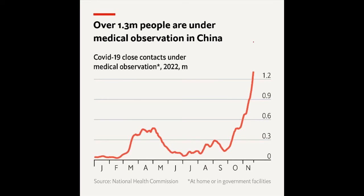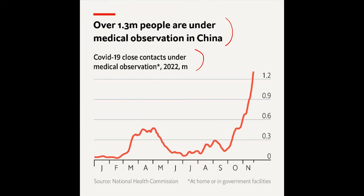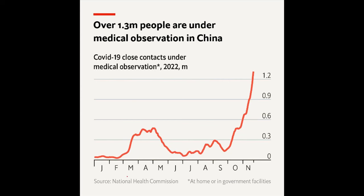The first thing I noticed about charts from The Economist is that they're all very simple. Almost without exception, you can understand all of them within just a few seconds. Take this chart about COVID-19 in China, for example. It shows how 1.3 million people are under medical observation in China currently. There's a very basic title and descriptive title right here. The chart itself is just a basic line chart, which is probably the easiest chart there is to understand. The font is a nice sans-serif that's really easy to read, and even the colors are just a basic black, red, and gray. Notice even how these months down at the bottom — instead of writing out the full names of the months, they just write out the first letter, keeping the chart simple and focusing on the actual data.